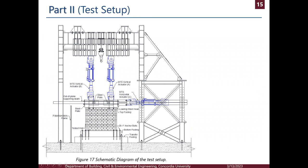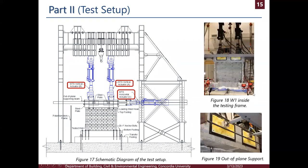This is the test setup. As mentioned, we have two vertical actuators used to apply the axial load and the top overturning moment, and a horizontal actuator used to apply the horizontal cyclic displacement. The first wall is shown inside the testing frame ready for testing, with an out-of-plane support used to prevent out-of-plane movement, since the test setup is designed to monitor the in-plane cyclic behavior of the wall.